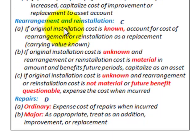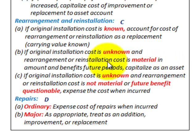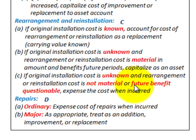If the original installation cost is unknown: (B) if the rearrangement or reinstallation cost is material in amount and benefits future periods, capitalize it as an asset. (C) If the original installation cost is unknown and the rearrangement or reinstallation cost is not material, or future benefits are questionable, then expense the cost when it's incurred.